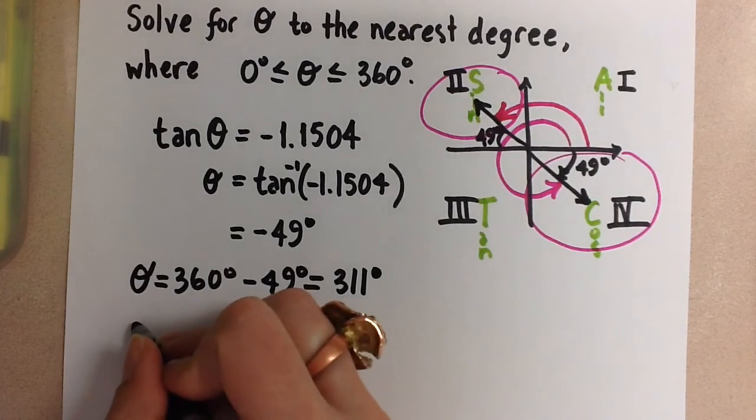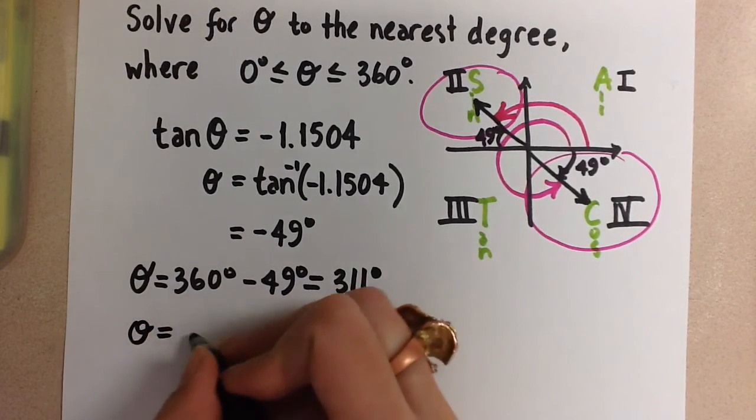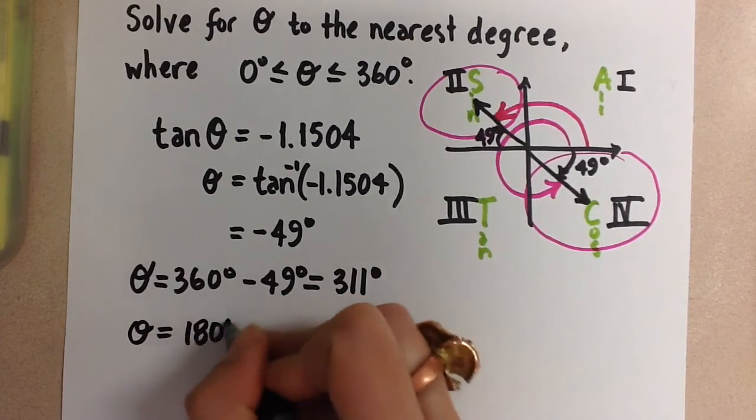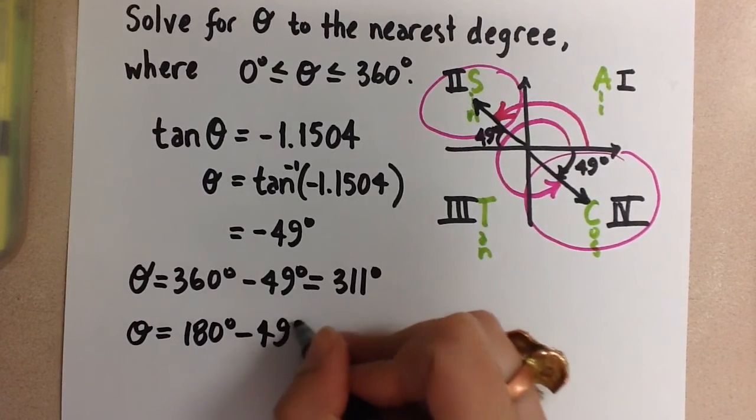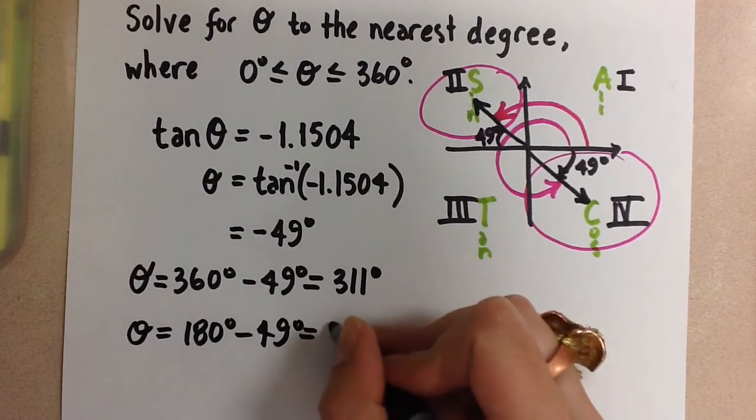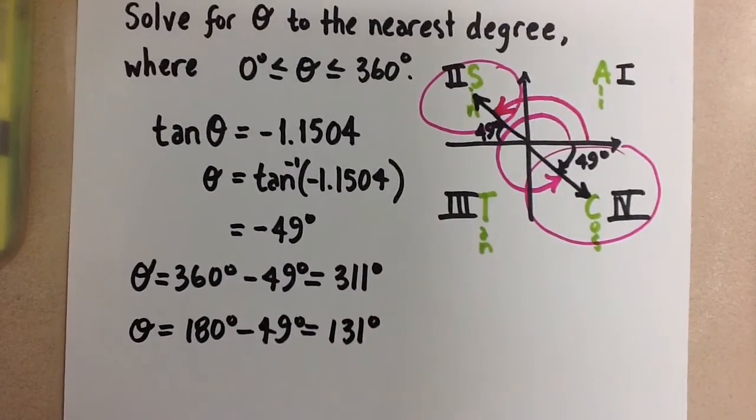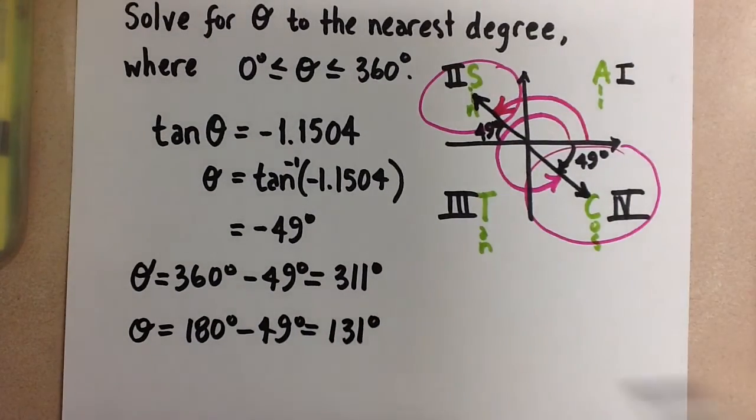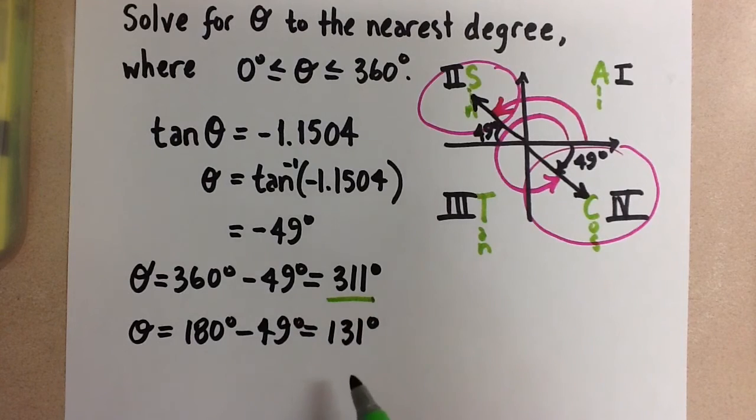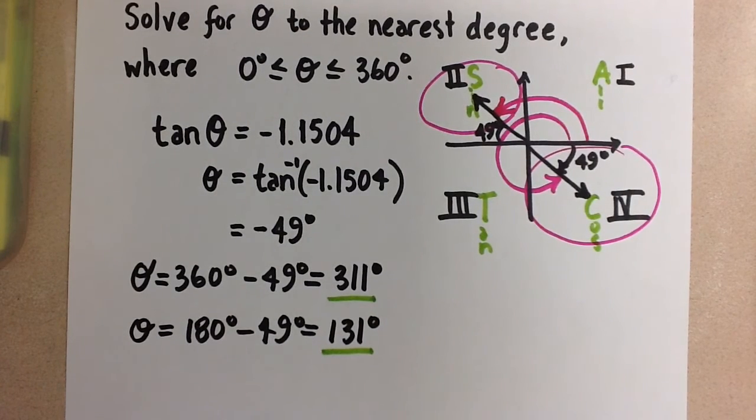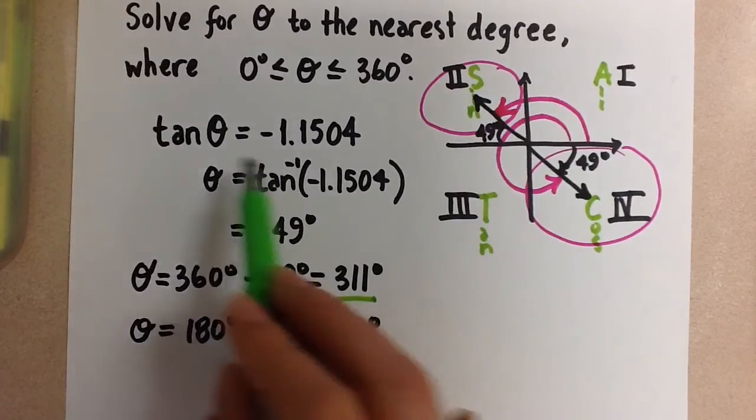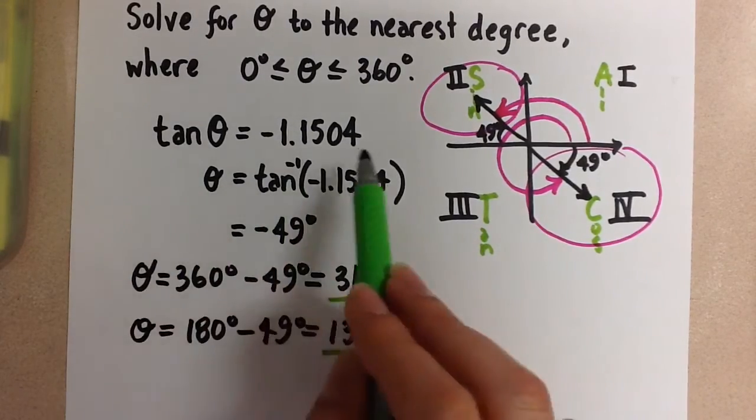So to find that one, we are going to do 180 degrees minus 49 degrees, and we get 131 degrees. So our two solutions here are 311 degrees and 131 degrees. So both of these angles should satisfy this equation.